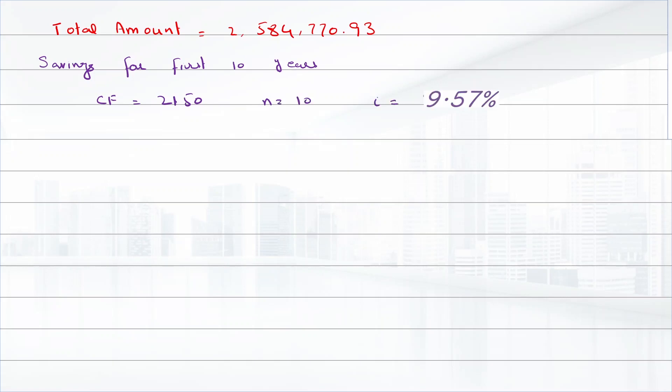Cash flow savings will be $2,150 and n will be 120 months. Interest will be 9.57%. After 10 years his savings will equal cash flow times [(1 + i)^n - 1]/i. That's 2,150 times [(1 + 0.0957/12)^120 - 1]/(0.0957/12), which equals $429,707.29.